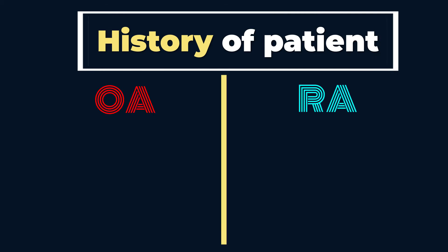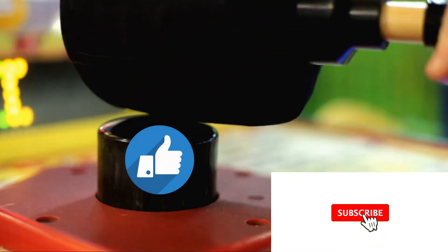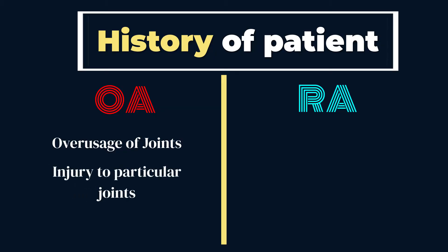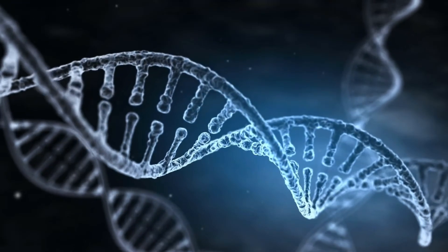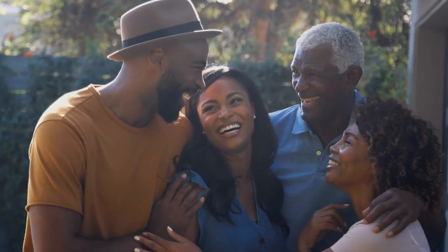Number four: history of the patient. For OA, one usually gives a history of over-usage of joints — for example, a typist, a labourer, or a factory worker who uses their hands a lot, or someone who is busy smashing the like button. Or a person who has a history of injury to a particular joint. As compared to RA, which can happen to anybody with no prior history of joint problems. Do note that both OA and RA have a genetic association, so watch out if any of your family members suffer from this disease, as the probability of you having it in the future will be higher.